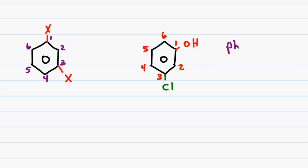then work our way clockwise so that chlorine gets the next lowest number which is 3. Since an OH on a benzene ring is called a phenol,